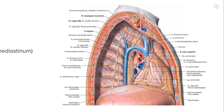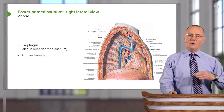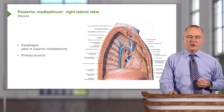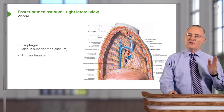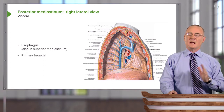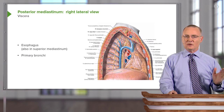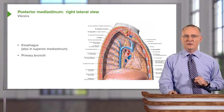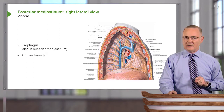Some authorities, some anatomists, will assign the primary bronchi into the middle mediastinum, but others will assign these — as I am — into the posterior mediastinum. I think it's simpler to keep that in mind because anything posterior to the posterior pericardium is then in the posterior mediastinum.